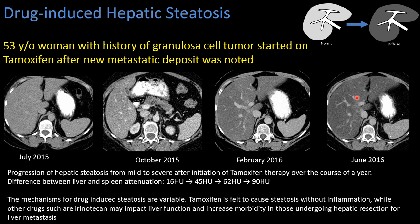The mechanism for drug-induced steatosis differs by drug. Tamoxifen is felt to cause steatosis without significant inflammation, whereas other drugs such as irinotecan — used with GI tumors — can impact liver function and increase morbidity. It is important to communicate these liver changes to the referring clinician, especially when liver-directed therapy such as resection of oligometastatic colorectal disease is being considered.